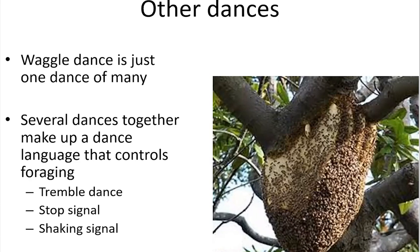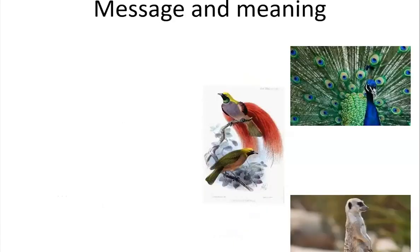Three of these — the waggle dance, the tremble dance, and the shaking signal — are really easy to see. You can see them in your colonies, and if you set up an observation hive, you'll be sure to see them. I'll show you some videos of what they look like. The stop signal is a little harder to see; I'll show you a video of that as well — it's more of an acoustic thing.